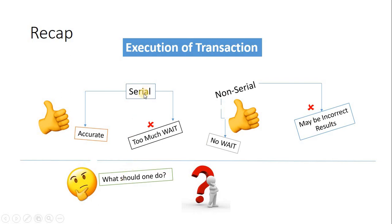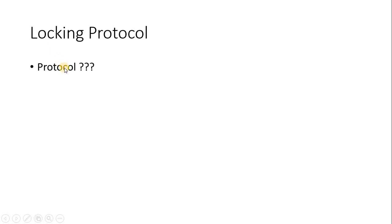Here comes the question: what should one do? Should we choose serial, where waiting is very high, or non-serial, where the chances of incorrect transaction results increase significantly? The answer to all of this is the locking protocol. But before starting with locking protocol, we will first look at what a protocol actually is.